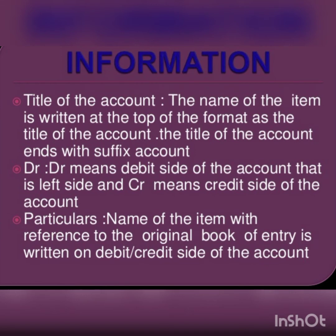The next column is the journal folio (JF) column. It records the page number of the original book of entry on which the relevant transaction is recorded. This column is filled up at the time of posting. The next is the amount column, which records the amount in numerical figures corresponding to what has been entered in the amount column of the original book of entry.